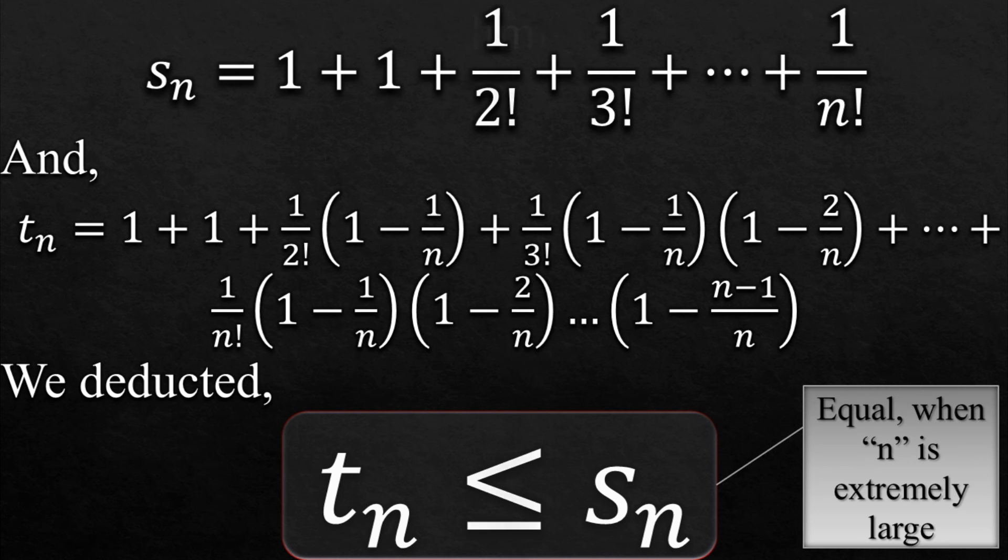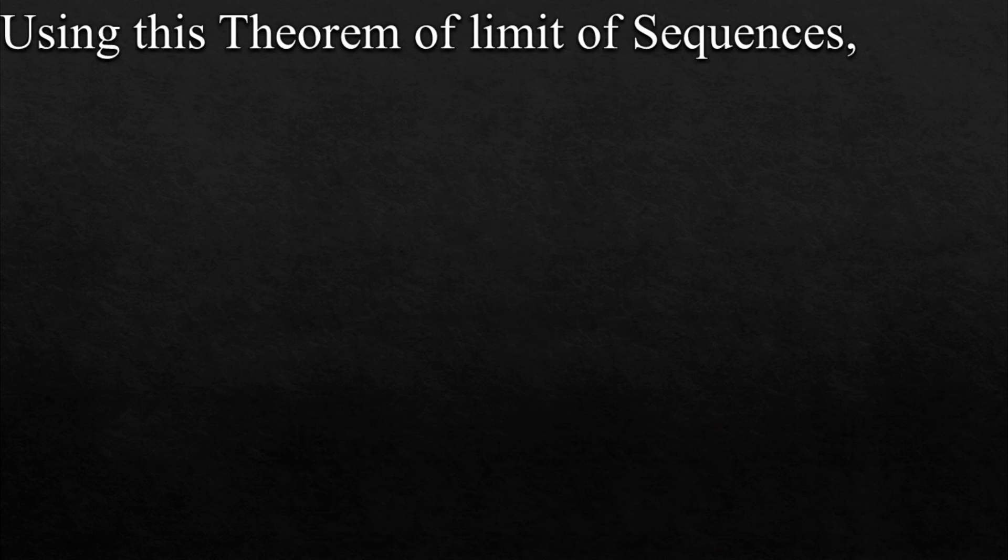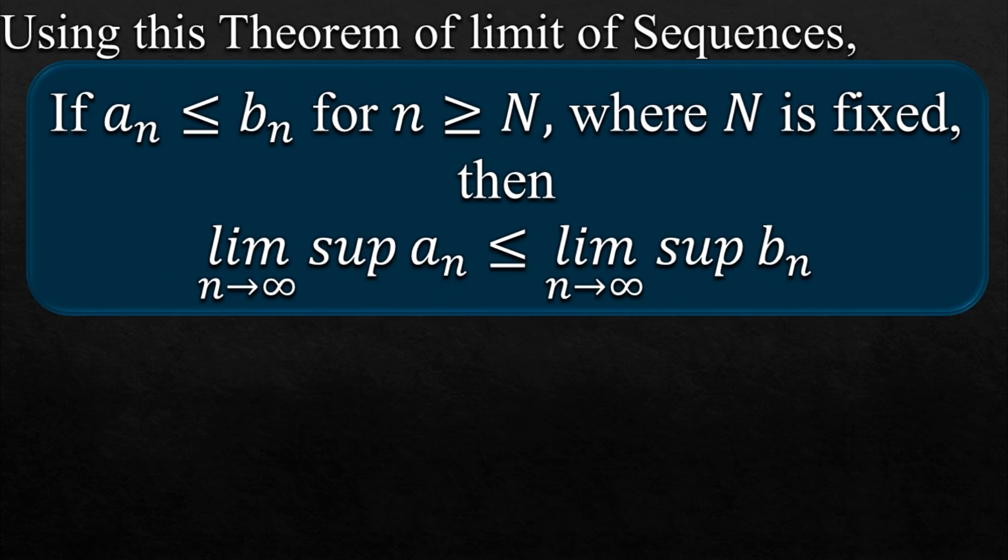Alright, moving on. Look at this theorem of limit of sequence. If two sequences An and Bn have a relationship that An is less than or equal to Bn for n greater than or equal to capital N where capital N is fixed - I'm not going to go into the detail of this right now. But what happens after that: their supremum when limit is applied that tends to infinity have the same relationship between them.